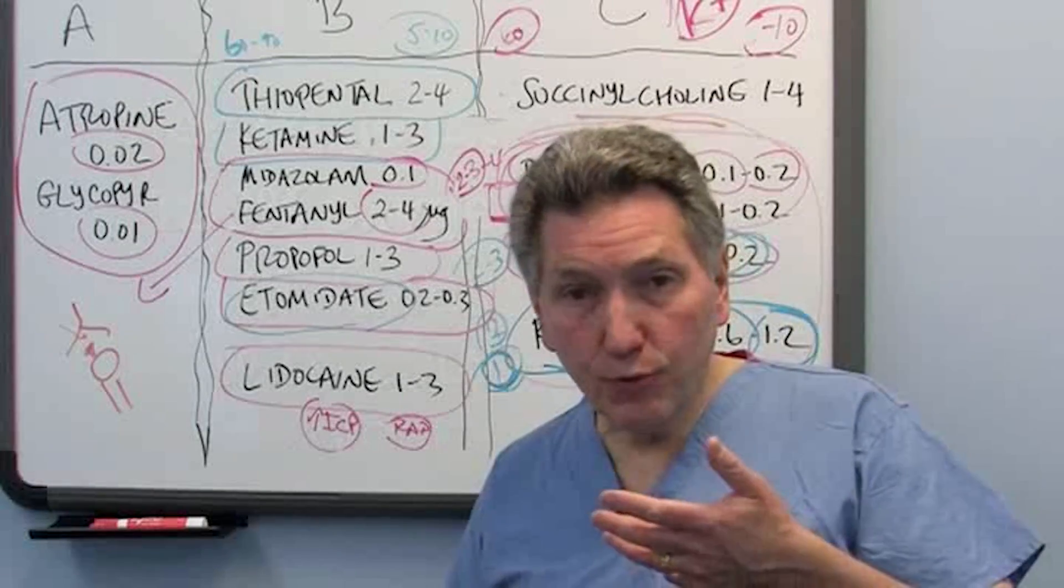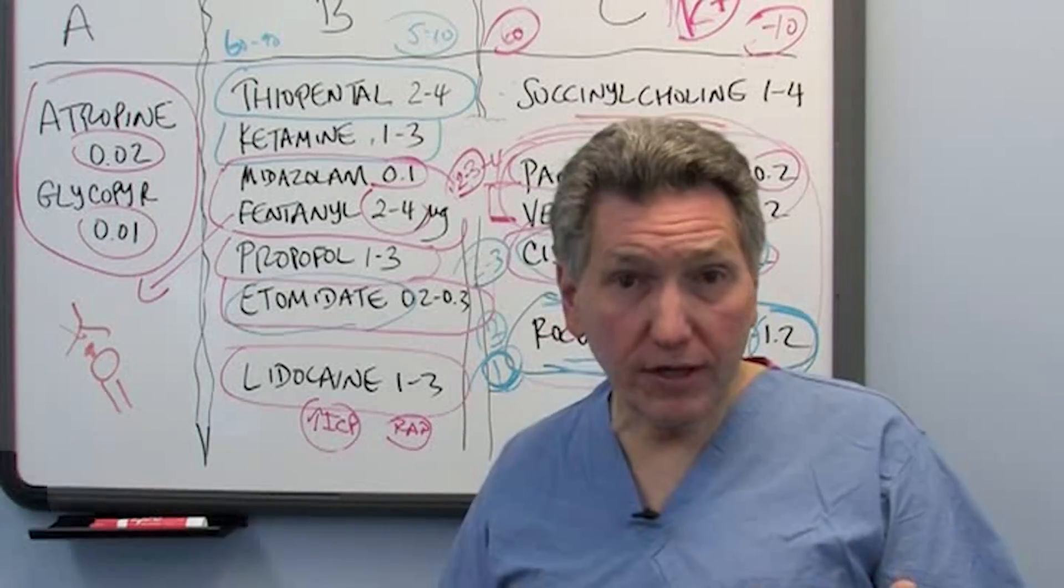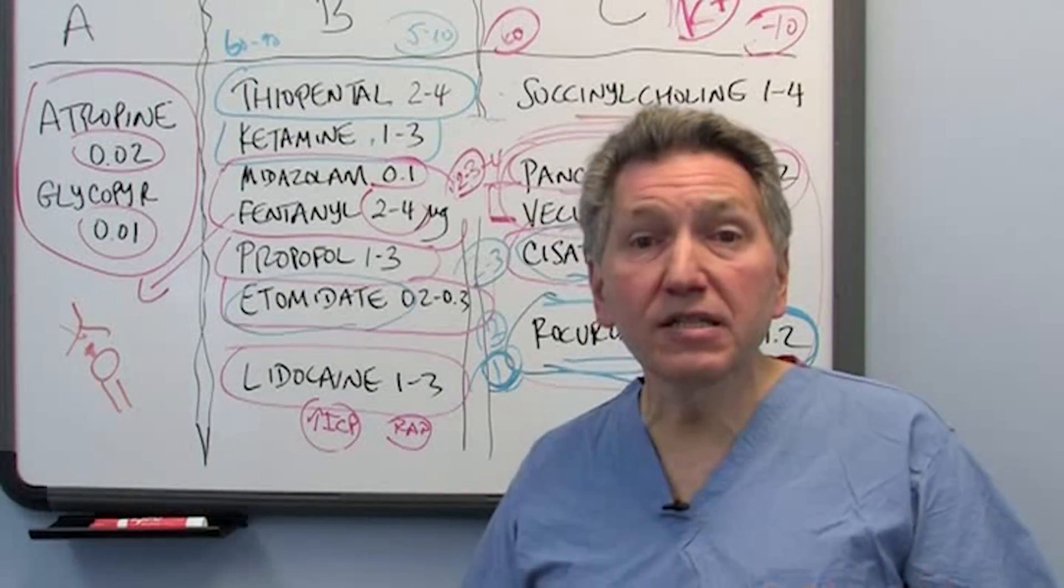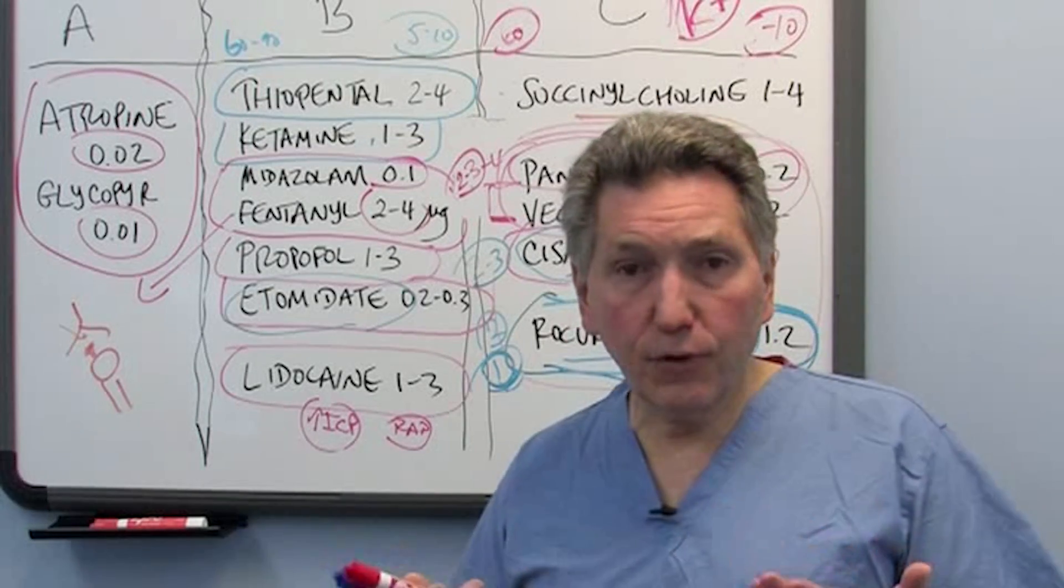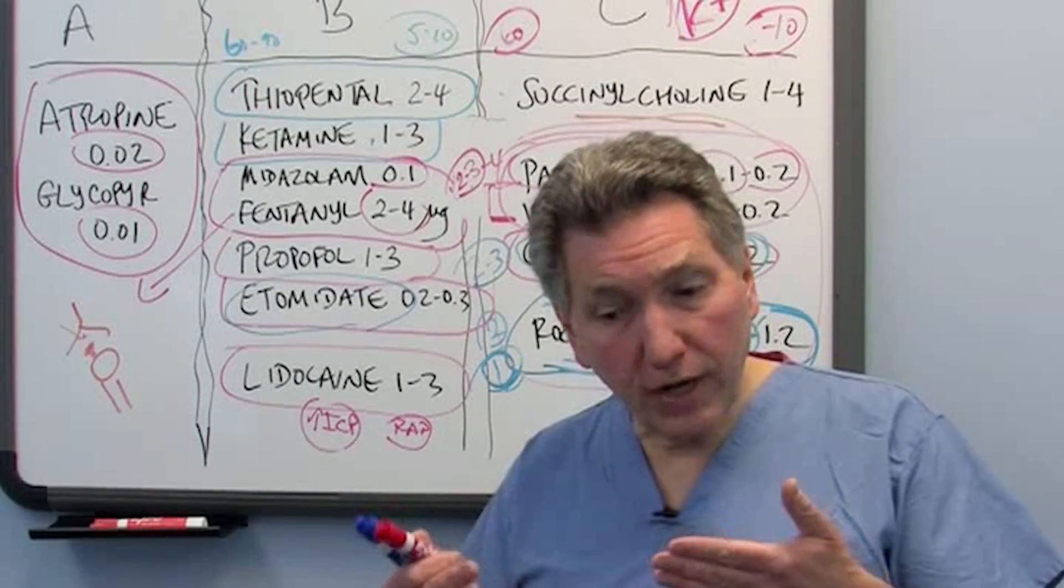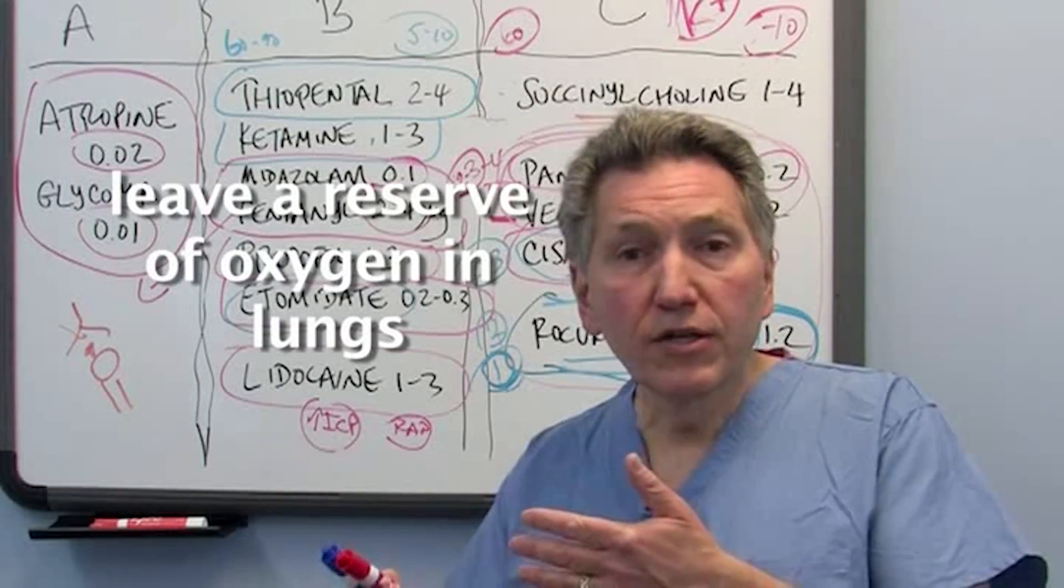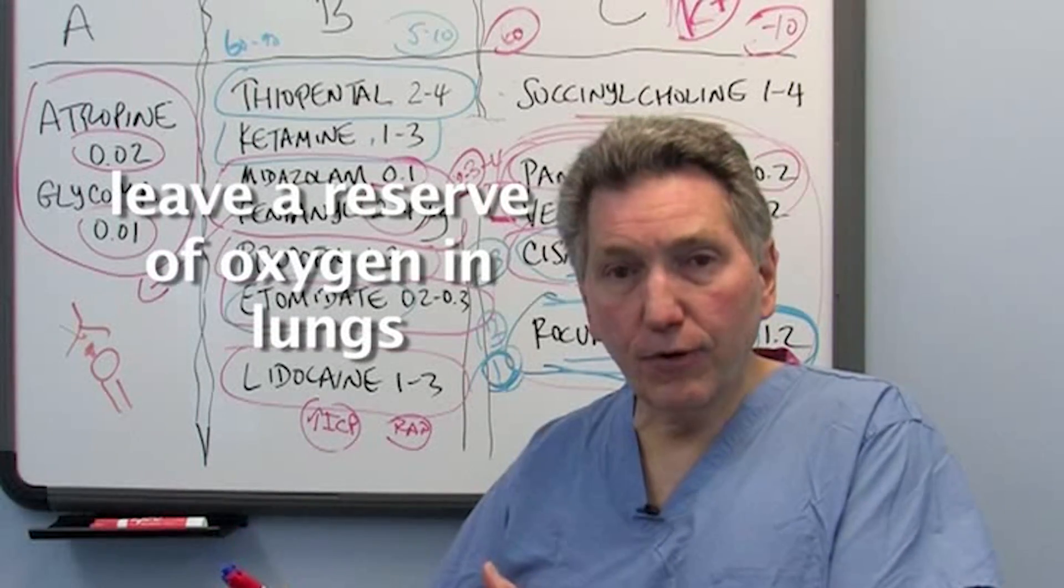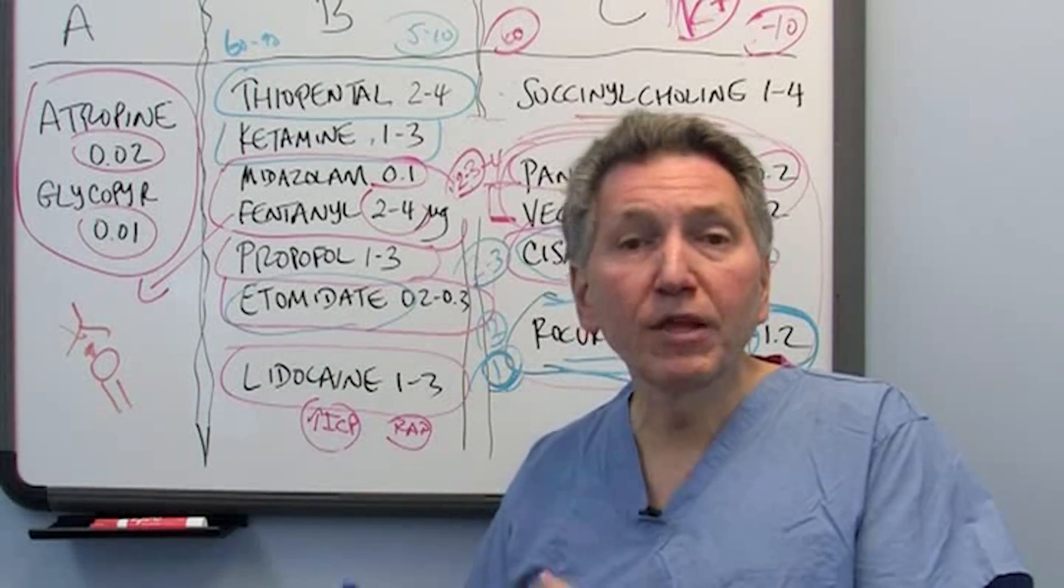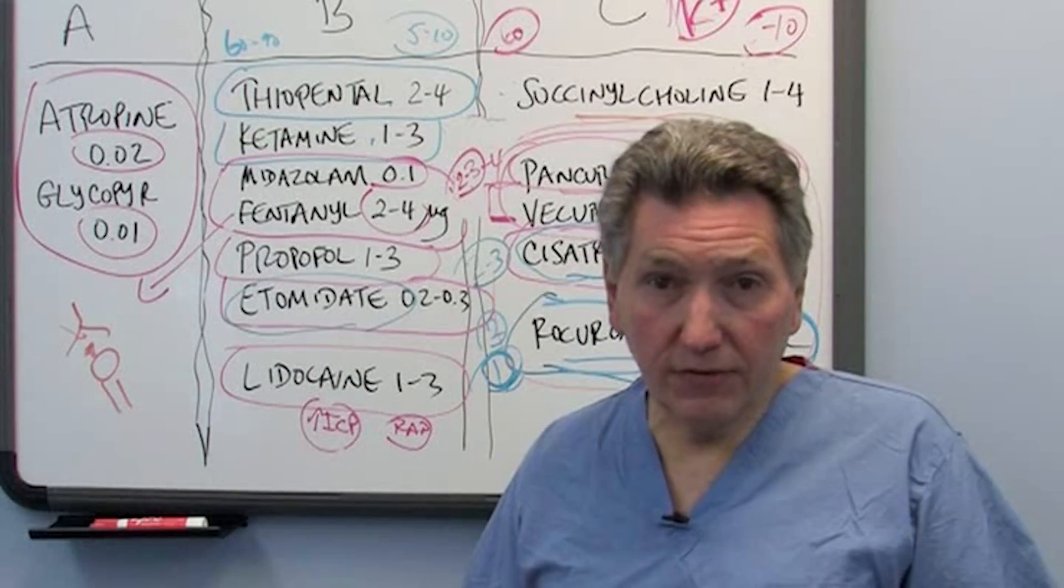And if the average patient breathes oxygen, 100% oxygen for 3, 4, 5 minutes, then you can be reasonably certain that their FRC is full of 100% oxygen. And what you're trying to do is leave a reserve of oxygen in their lungs so that if you make them apneic for a period of time while you're putting the endotracheal tube in, they won't desaturate significantly.